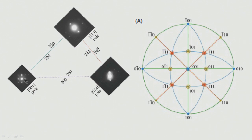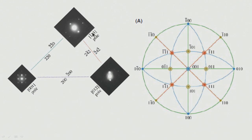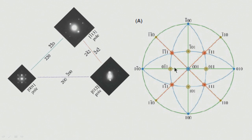In a crystal, the various planes and directions make specific angles, so when we tilt from one zone axis to another — for example from 001 to 1̄13 or to 012 — the indexing of the patterns must be consistent. For that purpose we use a stereographic projection. The stereographic projection can be used for indexing and to decide in which direction to tilt.